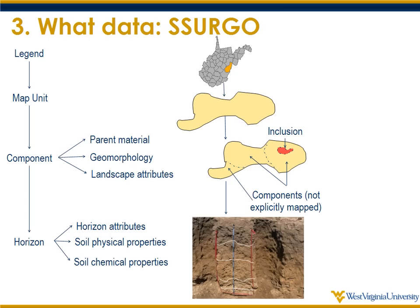Thinking about the data — obviously if we're going to disaggregate SSURGO, we need to use SSURGO at some level. We have different levels of information within the SSURGO database. A lot of what we've been using is landscape attributes at the component level, and geomorphology to try to get at rules about where in a map unit components exist. We do this so we can also better represent what's further down the database — you can get at the horizon attributes, maybe some derived products from a disaggregated product.